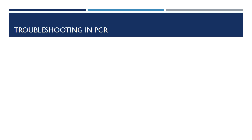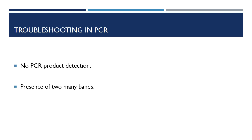If no PCR product is detected, repeat the procedure, checking carefully that all components are added to the reaction mixture. If there is still no product, check that the annealing temperature is not too high or the denaturing temperature is not too low. If too many bands are present, this may indicate: (1) primers may not be specific, (2) the annealing temperature is too low, or (3) there is an excess of magnesium ions, dNTPs, primer, or enzyme. Bands corresponding to primer dimers indicate: (1) the 3 prime ends of the primers show partial complementarity, (2) the annealing temperature is not high enough, or (3) the concentration of primers is too high.